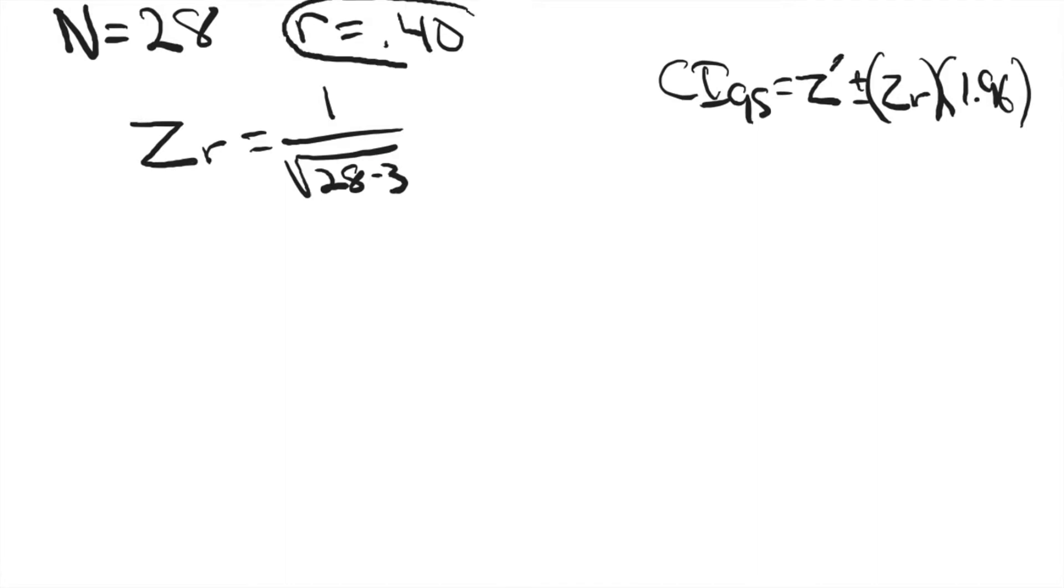To calculate a confidence interval, this is the formula. First, we need a few different pieces. We need this z prime, which is a transformed confidence interval, and we'll look that up in a minute.